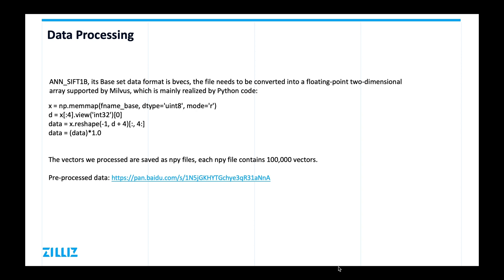Because our base set has a size of 22 gigabytes, this method can divide a large file into smaller segments for reading and writing, instead of reading the whole array into memory at once. The second step is taking the first 4 bits of x as the vector dimension and converting the data type into int32. The third step is to use the numpy reshape method to change the format of the array. The last step is to convert the integer data to float data.